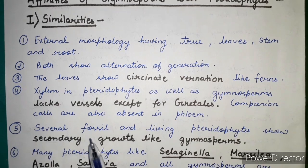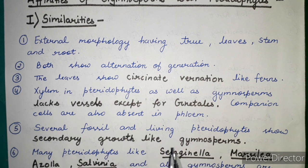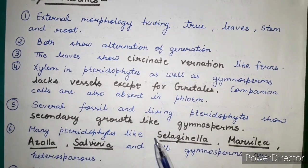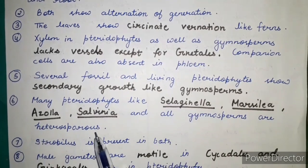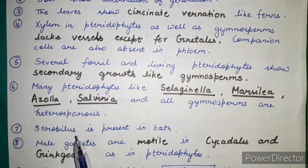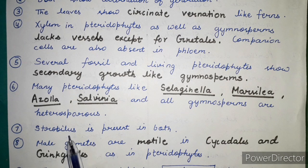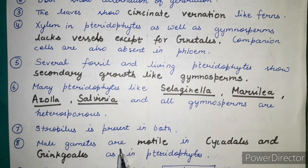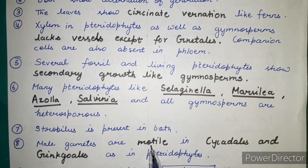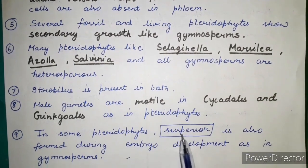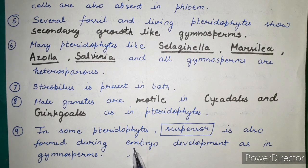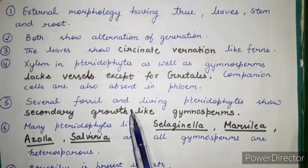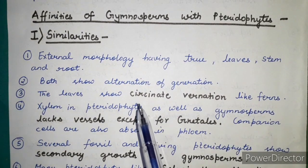Fossil and living pteridophytes also show secondary growth, similar to gymnosperms. Pteridophytes such as Selaginella, Marsilia, Azolla, and Salvinia are all heterosporous. Strobilus is present in both pteridophytes and gymnosperms. Male gametes are motile in Cycadales and Ginkgoales, as in pteridophytes. In some pteridophytes, a suspensor is present during embryo development, as in gymnosperms. These are all the similarities between gymnosperms and pteridophytes.